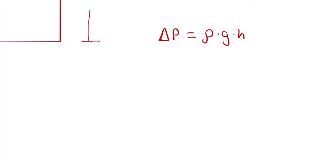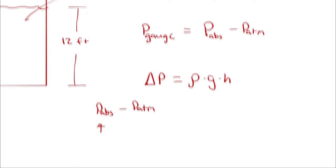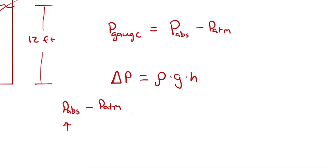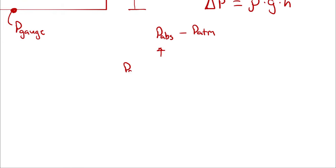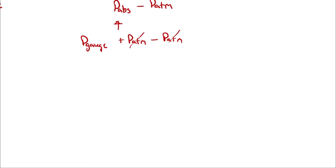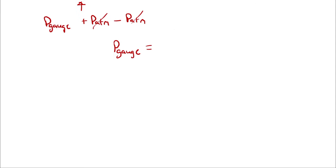So the pressure difference, delta p here, is going to be the absolute pressure at the bottom minus atmospheric pressure. And when I rearrange absolute pressure as gauge pressure plus atmospheric pressure, then I'm left with just gauge pressure on the left hand side of this equation. So the gauge pressure, the thing that I'm actually looking for, is the density of the fluid times gravity times 12 feet of height.